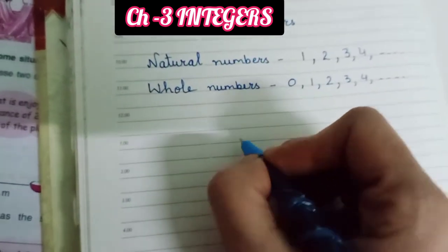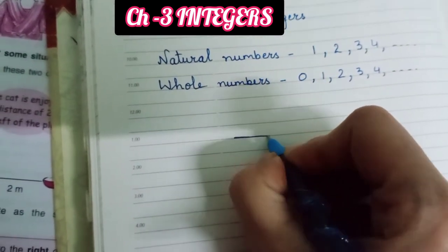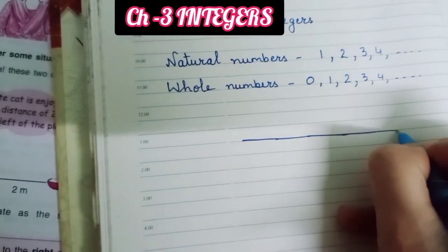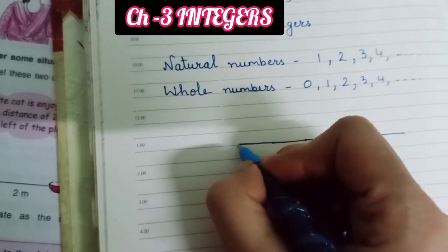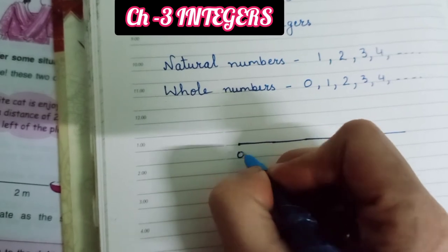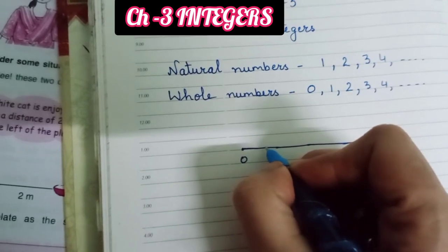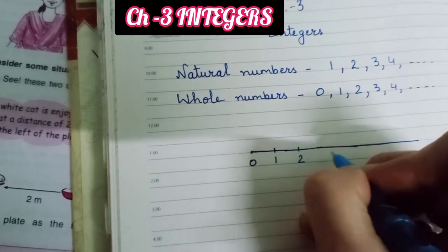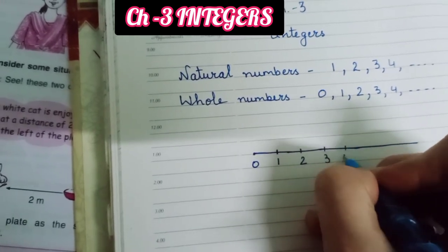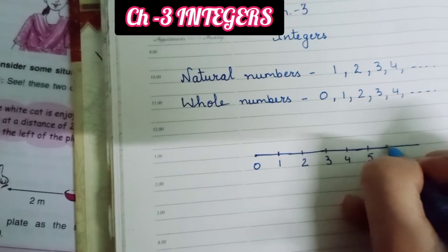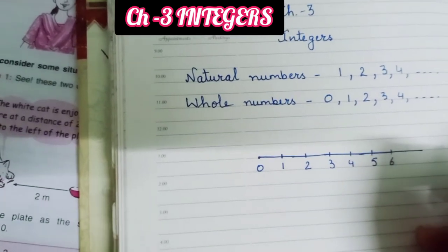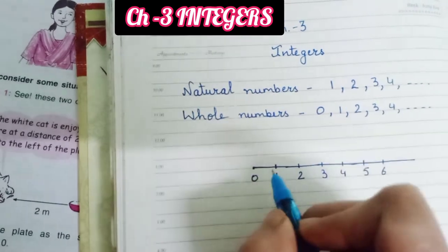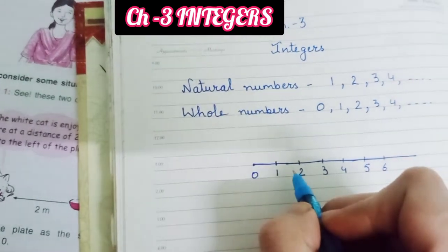Now, if we see the numbers on a number line, it starts from 0, then 1, then 2, then 3, 4, 5, 6 and so on. You see, all the numbers are on the right side of 0.